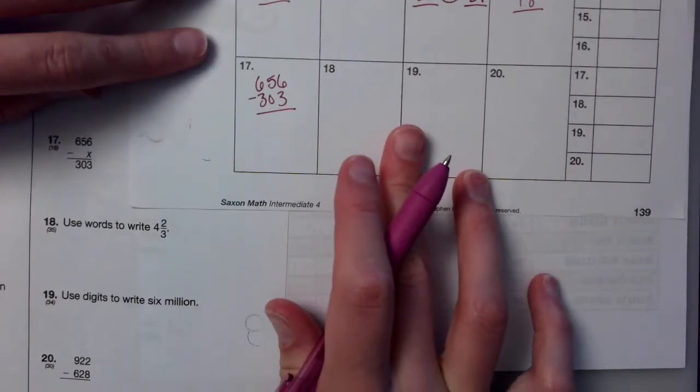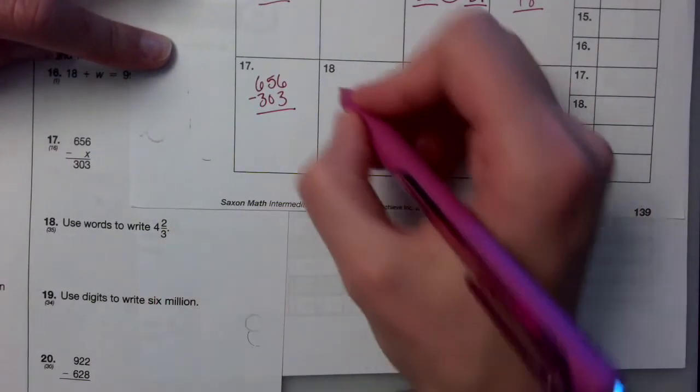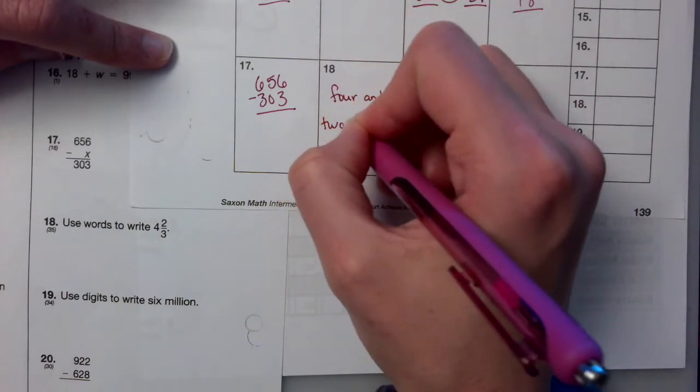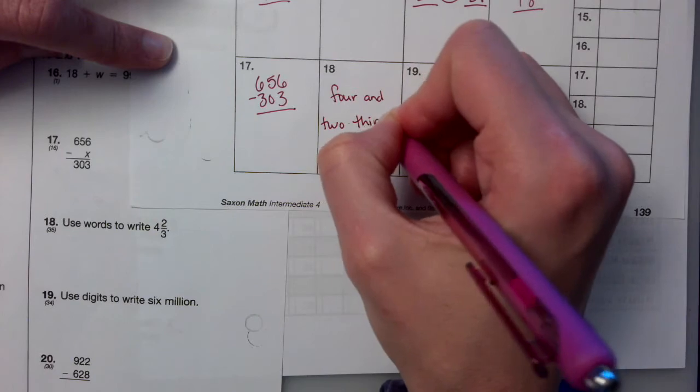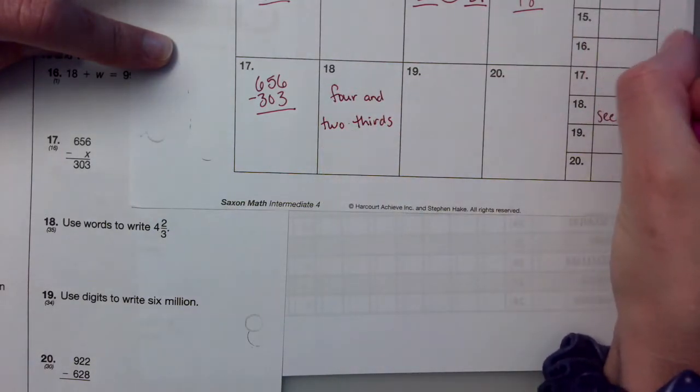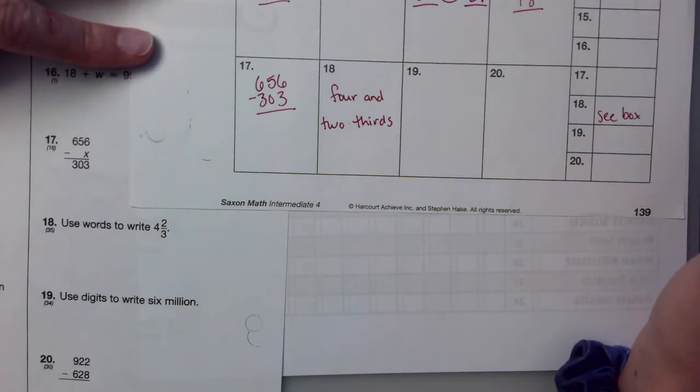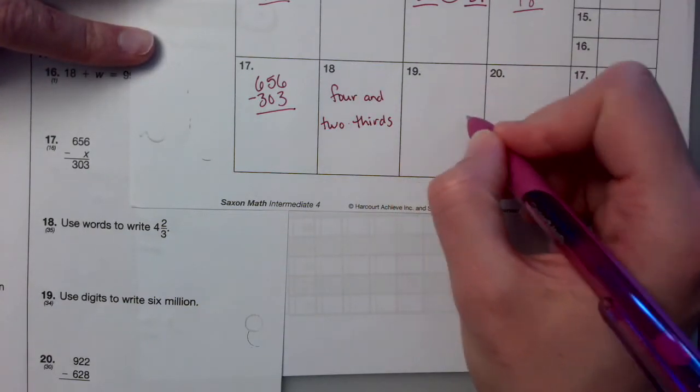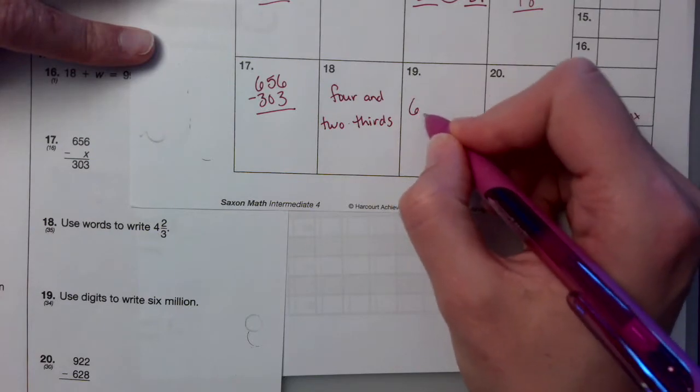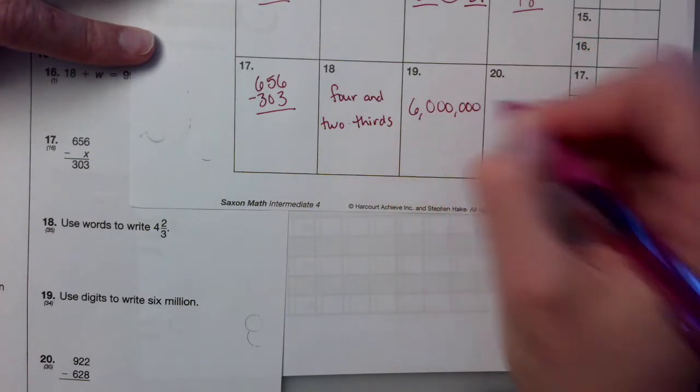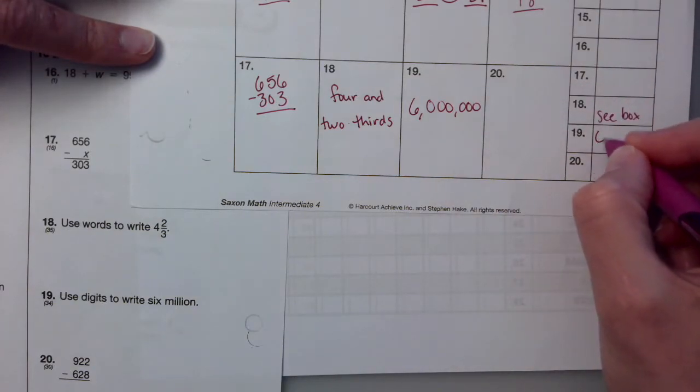18 says use words to write 4 and 2 thirds. And 2 thirds. That's a great C box one. 19, use digits to write 6 million. So 6 in the millions place. Remember, you need your three zeros for your thousands, and then your three zeros for your ones. So 6 million.